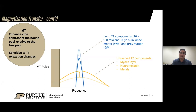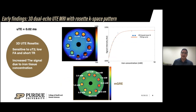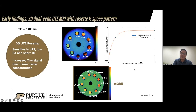In our early stages of testing this 3D dual echo ultrashort echo sequence at Purdue, we noticed that at the shortest echo time, the signal intensity of the iron-rich areas in the brain would actually increase. We performed a phantom experiment to characterize this relationship, and it shows that as the iron concentration increased, so did the signal in the UTE sequence, because at the ultrashort echo time we're not losing a lot of signal.